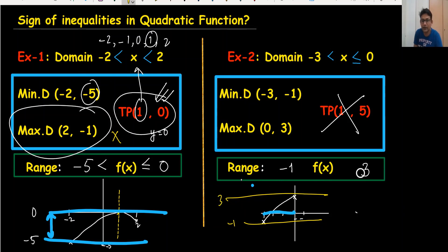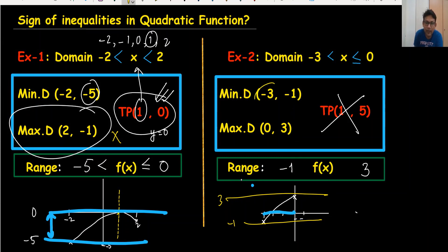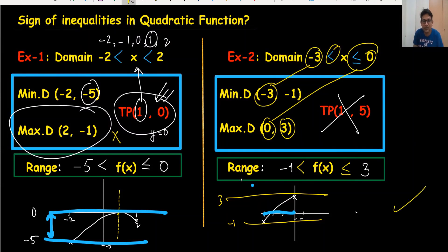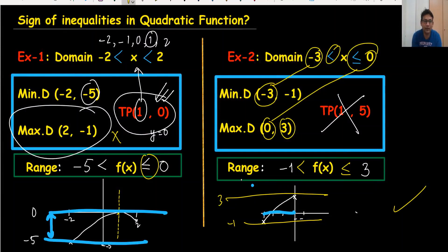If you want to learn how to find the range of a quadratic function, watch my video from the functions playlist. For the sign of inequality: minus one comes from minus three, so it takes that same sign. Three comes from zero, so it takes that sign. This is how we put the sign of inequality in the range. Thank you so much and have a nice day.